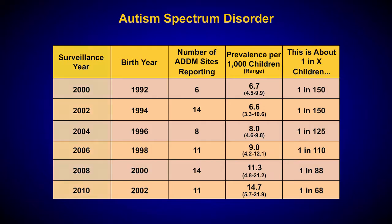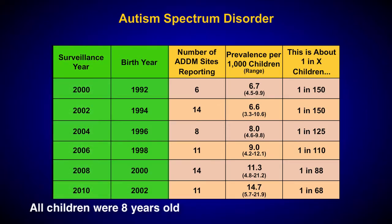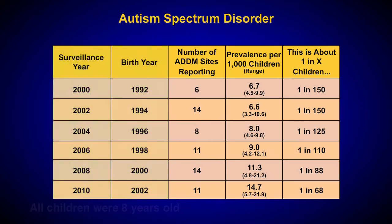Notice that the year of surveillance, the birth year of the surveyed individuals, and the prevalence of ASD are reported. Notice also that if you compare birth year with surveillance year, all surveyed children were 8 years of age. Since the children's age doesn't change, this information can be left out of a graph. Only the surveillance year and prevalence should be included.